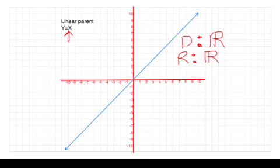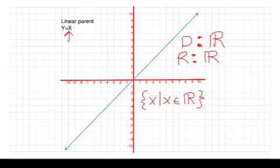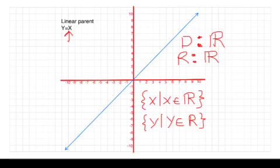Now I want to show you how to write this in set notation. Sets have brackets, and we write: the domain is the set of all x's, with a bar meaning 'such that,' followed by x is an element of the real numbers. We can do the same thing for the range: the set of all y's such that y is also an element of the real numbers, with no restrictions.